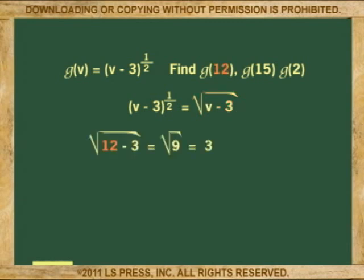So, substituting 12 for v, we get 12 minus 3 equals 9. Square root of 9 is 3. Again, we substitute, this time for 15. 15 minus 3 equals 12. Square root of 12 is about 3.464.